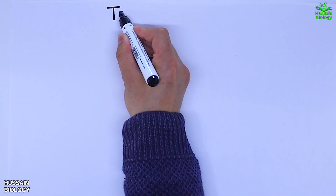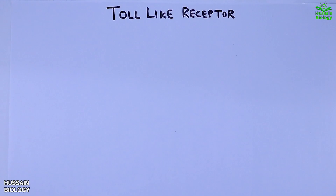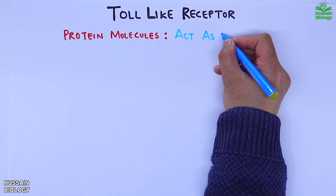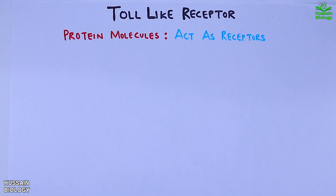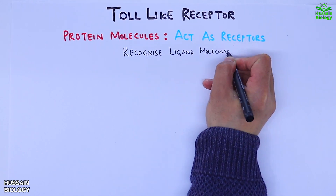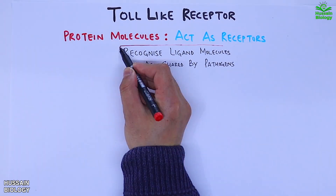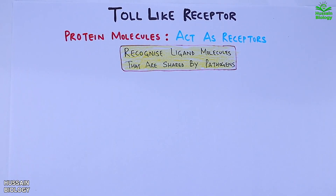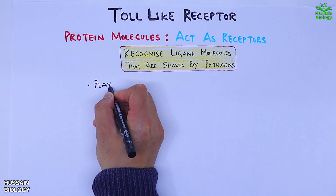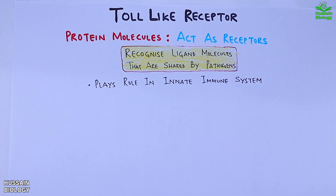In this video we will be discussing about the toll-like receptors. These are protein molecules that act as receptors. These receptors recognize ligand molecules that are shared by pathogens. That way, these toll-like receptors (TLR) play a crucial role in the innate immune system.